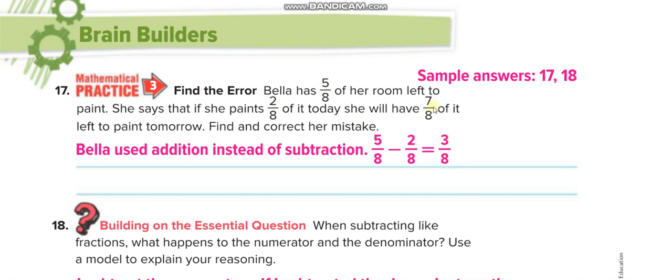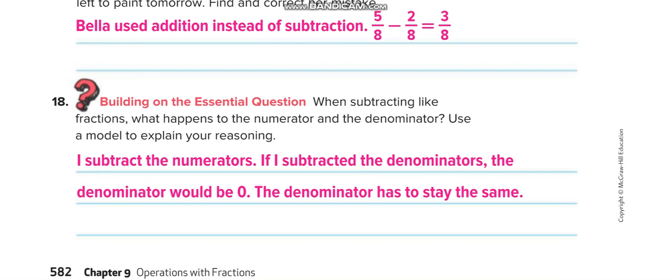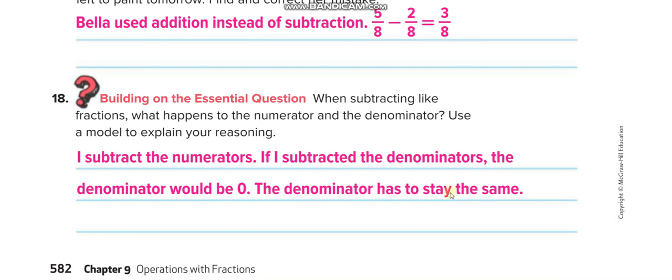So what's Bella's mistake? She did addition instead of subtraction. 5 over 8 plus 2 over 8 equals 3 over 8. Bella used addition instead of subtraction, and here is some definitions.